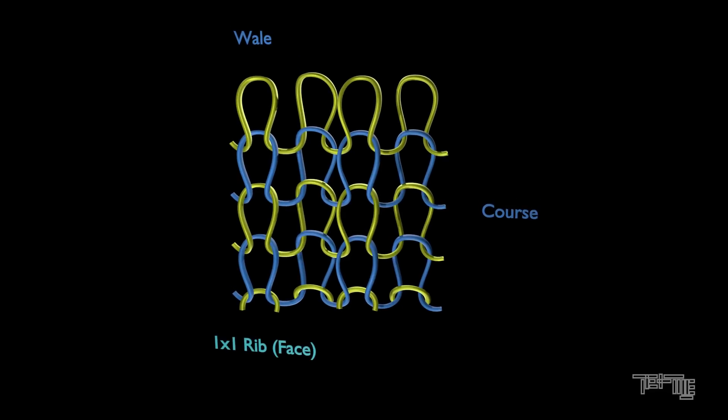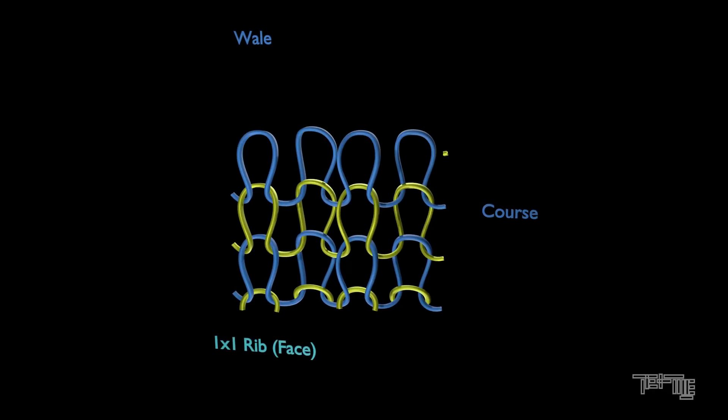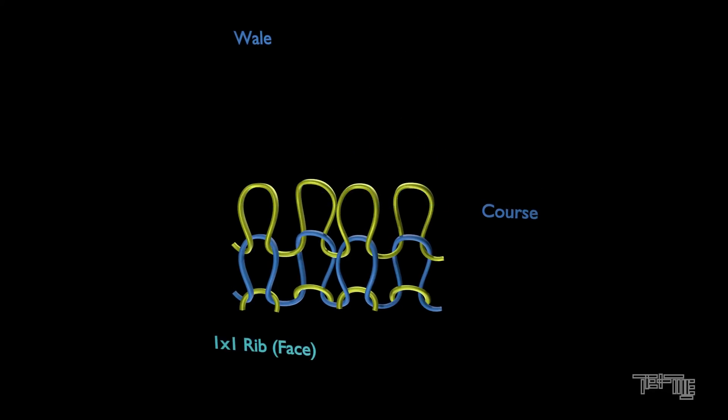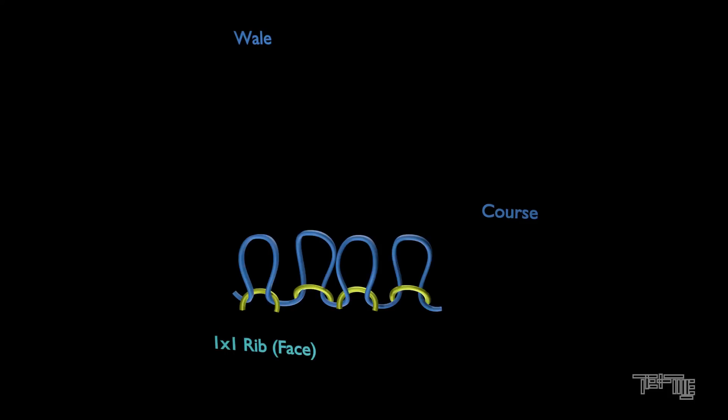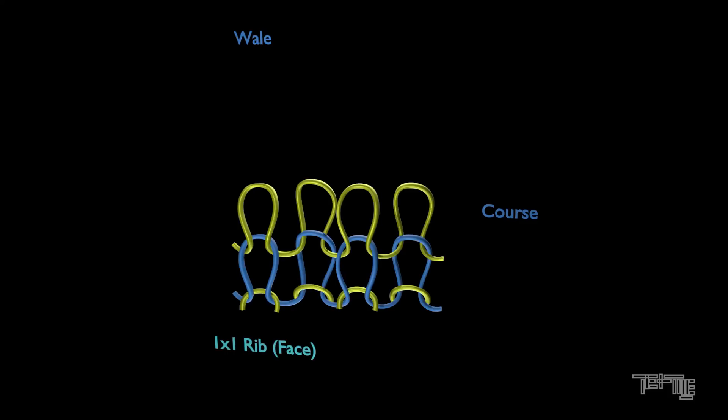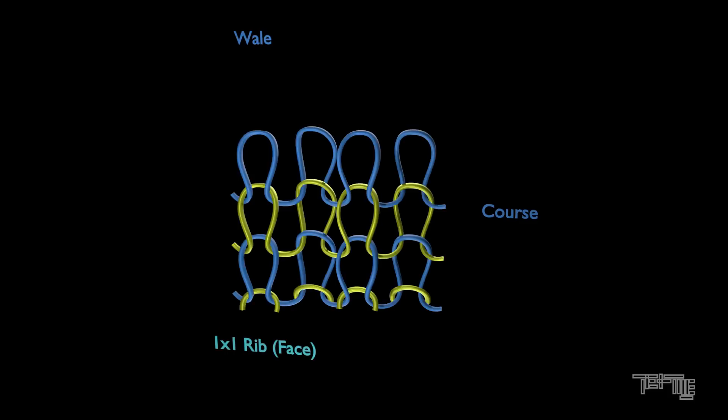Rib structures can easily be unraveled from the edge knitted last. Rib fabric is used in collars, cuffs, waistbands, underwear, and many fancy dresses.